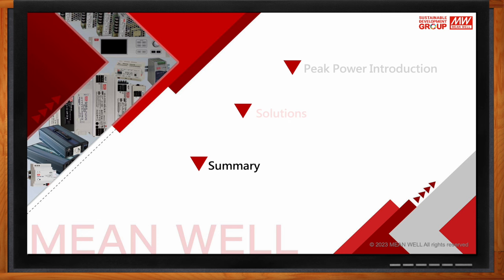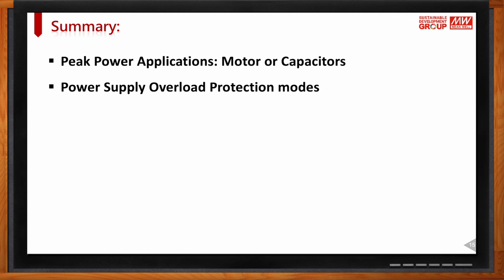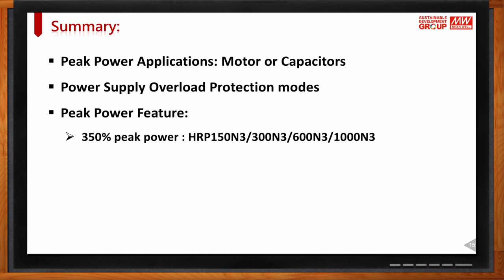Excellent. Karim, can you recap your main points? Sure. We started with peak power applications — motors and capacitive banks are the most common. We covered overload protection modes: hiccup mode is not suitable for motors and capacitive banks, while constant current limiting is required to allow the load to build up at startup. And we covered our solutions — the HRP with 350% peak power capability and the LRS with 200% peak power capability.